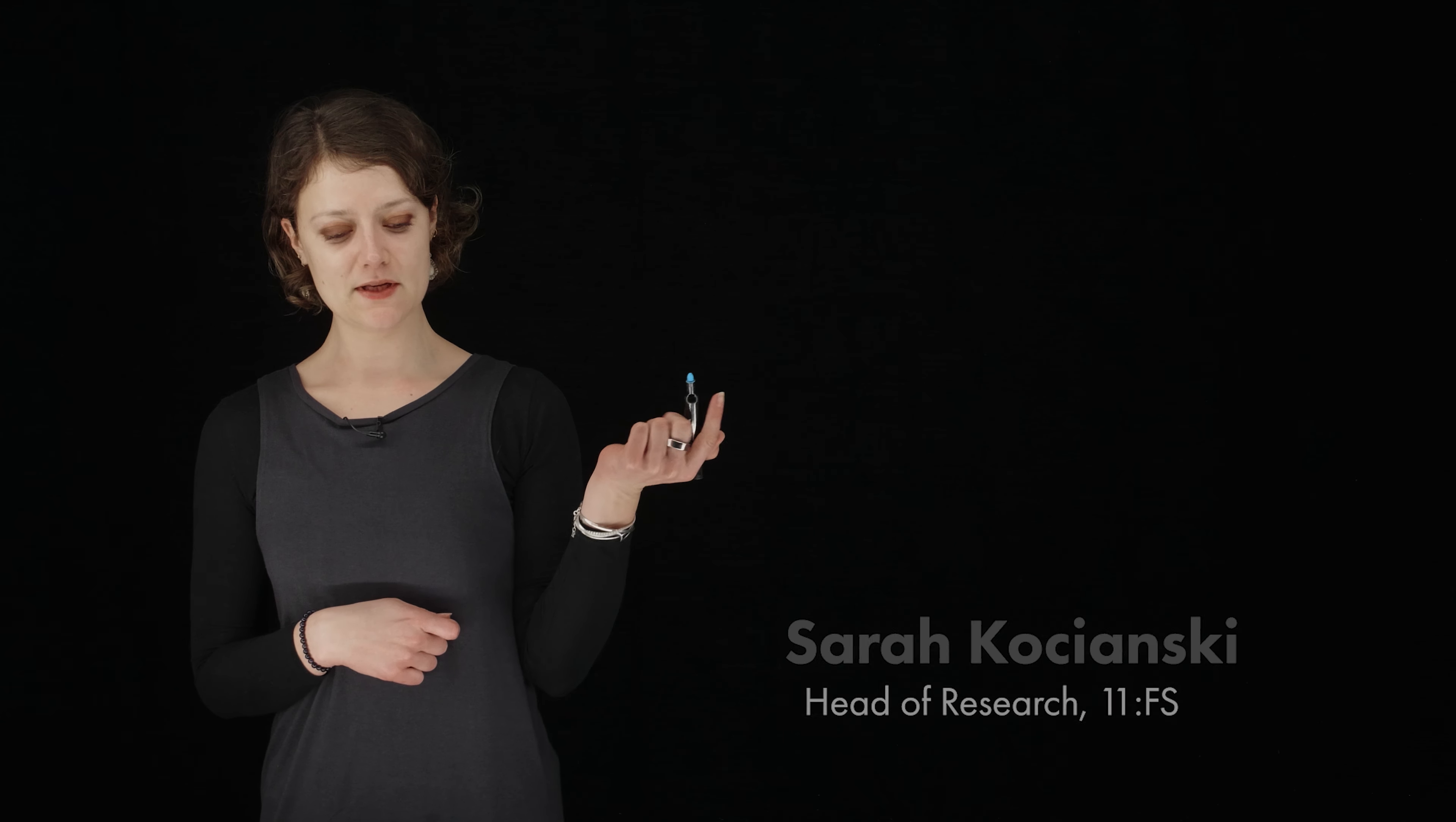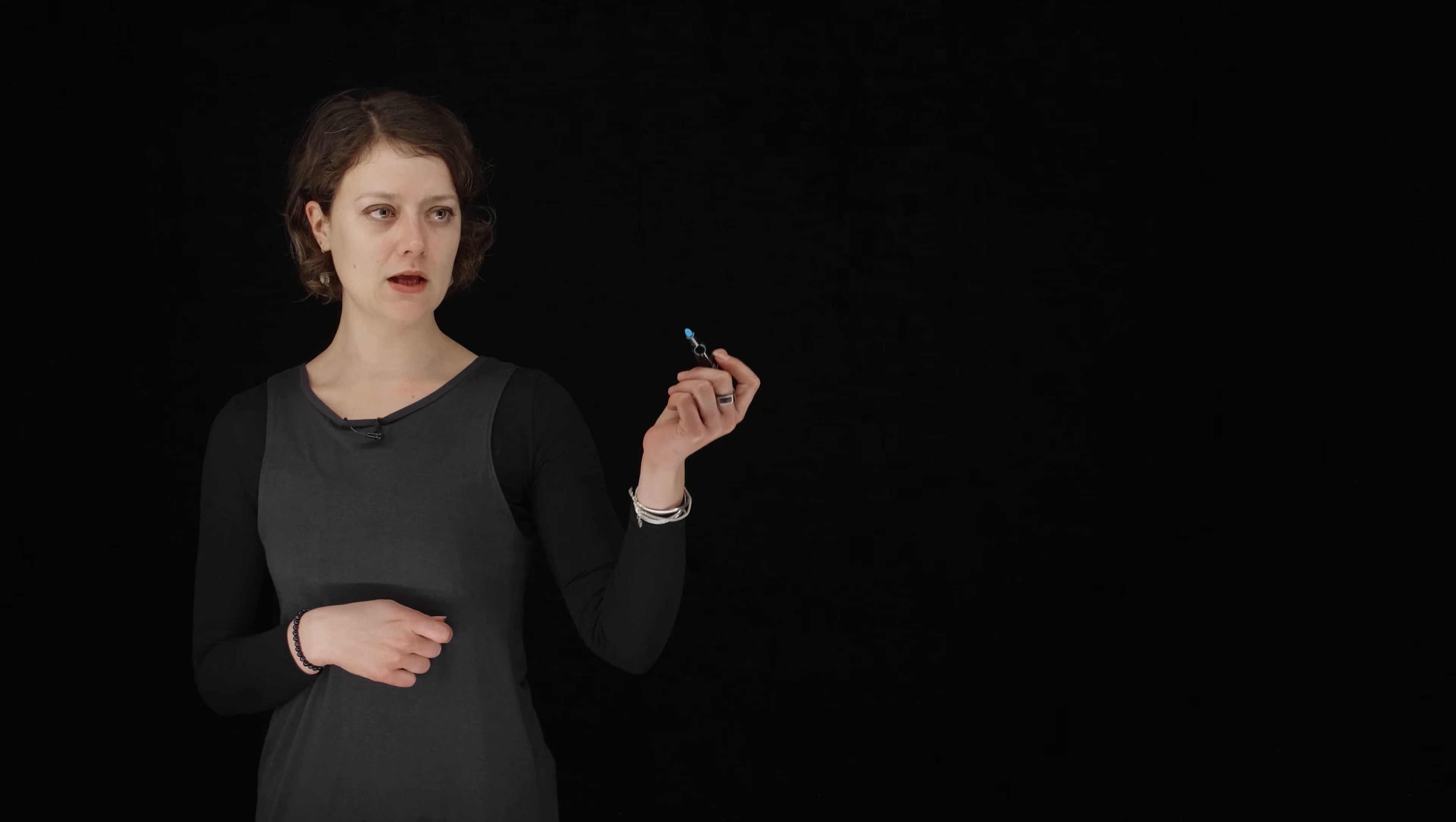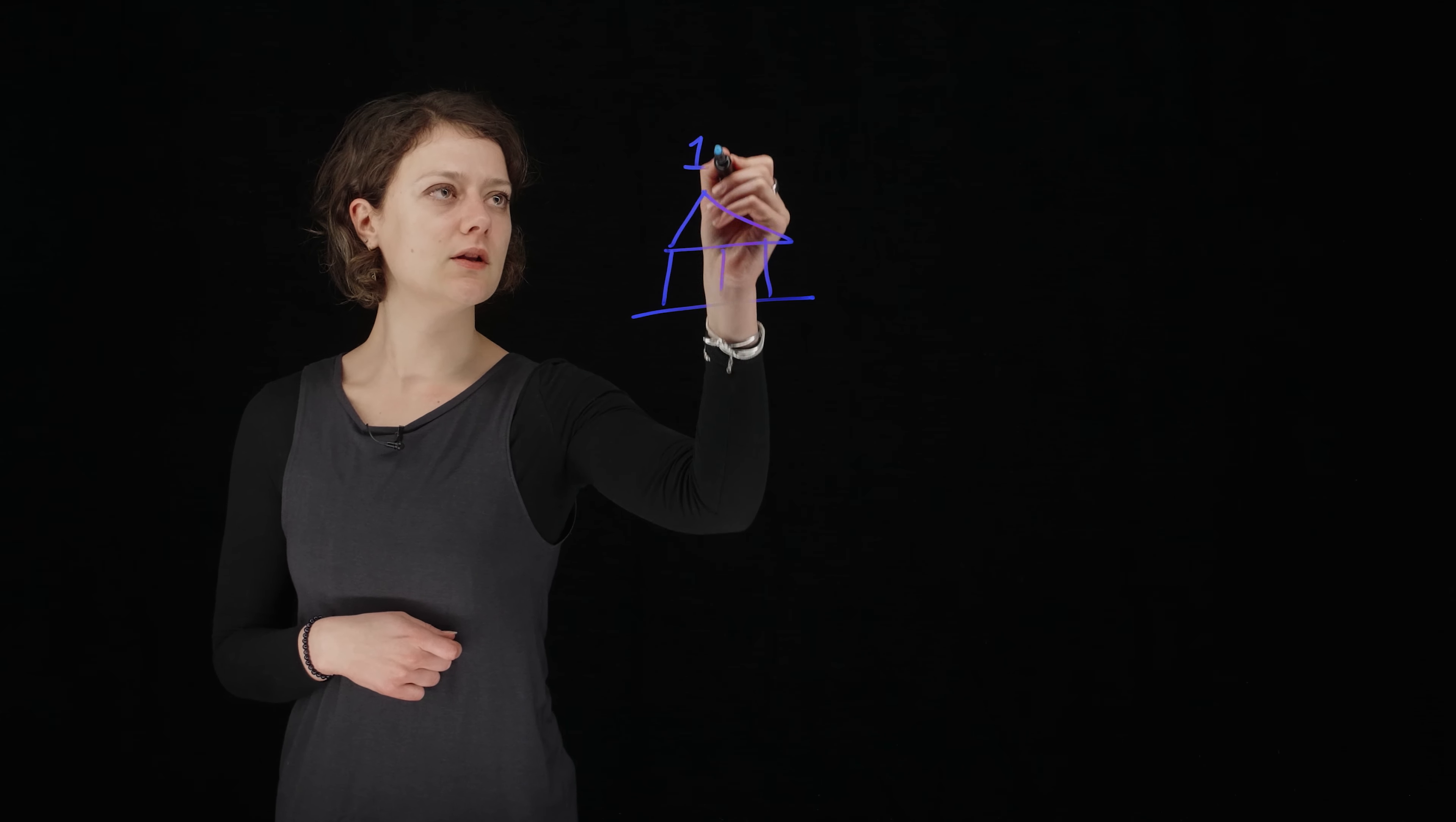So first things first, I'm going to explain how banks make money, and that's by a system called fractional reserve banking. So let's start off with bank number one. Here we go, this is not a pretty picture but you get the picture. So there's bank one.